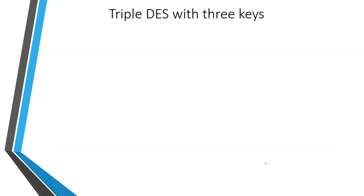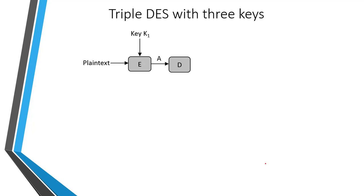Although attacks on Triple DES with two keys are impractical, anyone using two-key Triple DES may feel some concern. So Triple DES with three keys is established. First, encryption is performed on the plain text using key K1, giving output A. Then decryption is performed using key K2, giving output B. Finally, encryption is performed using key K3, giving the ciphertext. Note that three keys K1, K2, and K3 are used, compared to two-key Triple DES which uses K1, K2, K1.